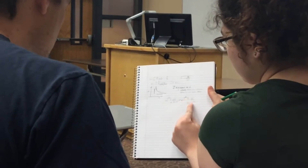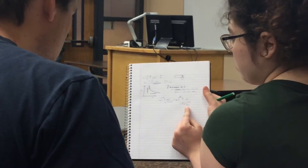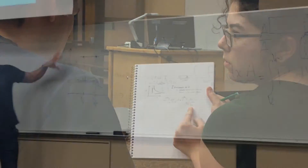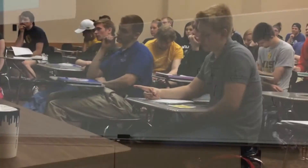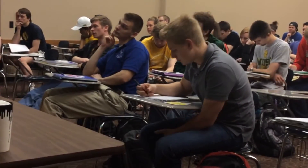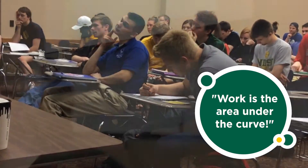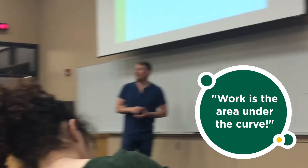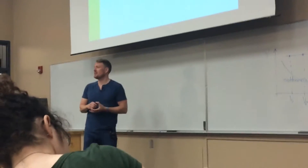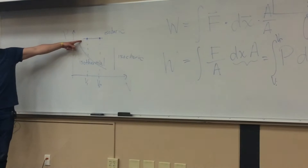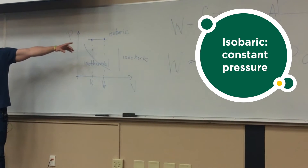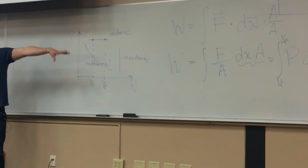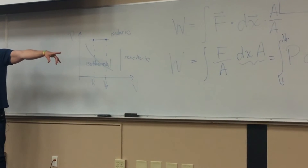Any thoughts about how we can read information about the work off of this particular picture? Area under what curve? What about for an isobaric process — what does that tell us about the work done?